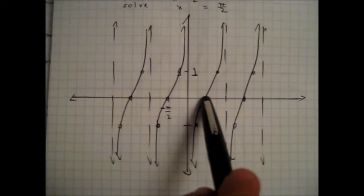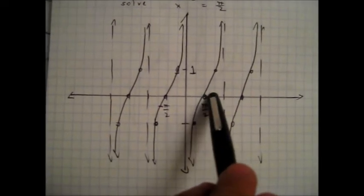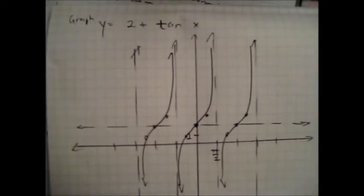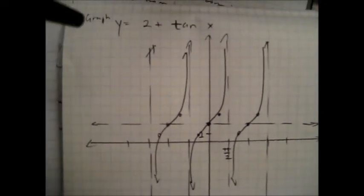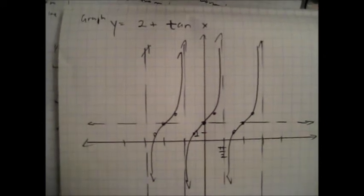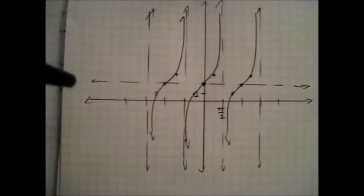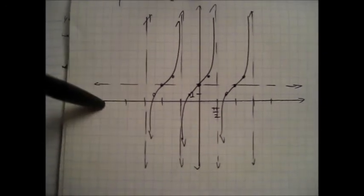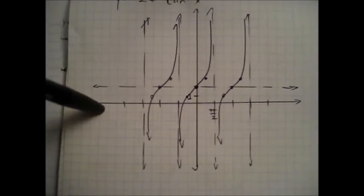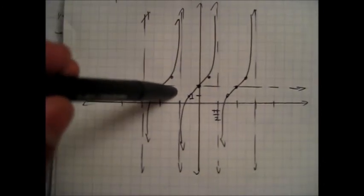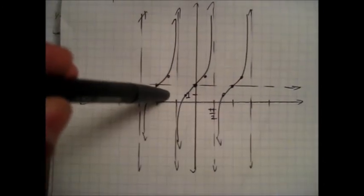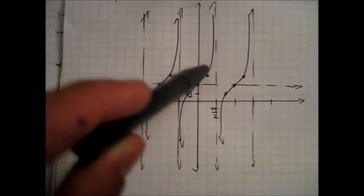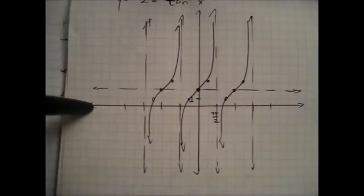Then you graph the thing like normal — you find the halfway point, put the zero, find the halfway point, and go up one. Another thing that can happen is vertical shifts. With y equals 2 plus tan(x), which also could be written as tan(x) plus 2, the whole graph gets shifted up two spaces. This reference line lets you imagine it as the original x-axis. In the parent graph, you would find the point between the two asymptotes and plot the zero, then find the point in between and plot the one — same thing, just shifted up two.